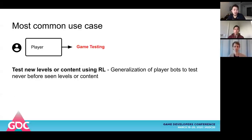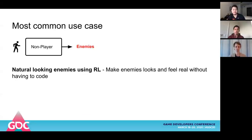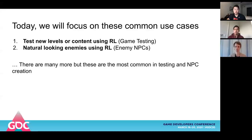On the game testing side, studios are trying to use deep reinforcement learning to test levels — some sort of generalization of a player bot to test new levels or content. The second use case is around enemies: creating natural-looking enemies that look and feel real without having to write a lot of code. So really that's what we're going to focus on today: testing new levels and content using RL, and creating natural-looking enemies. There are obviously many more use cases, but today we'll focus on these two.